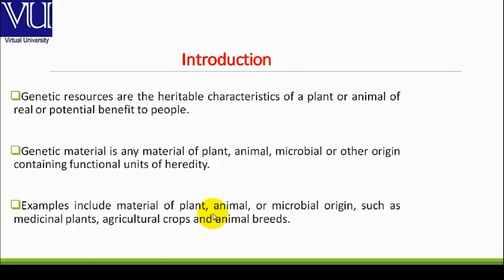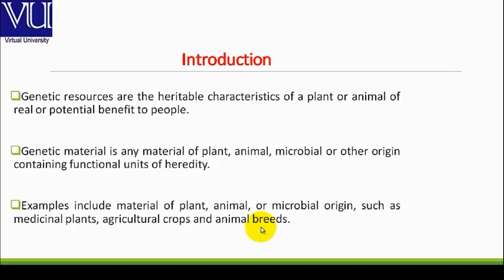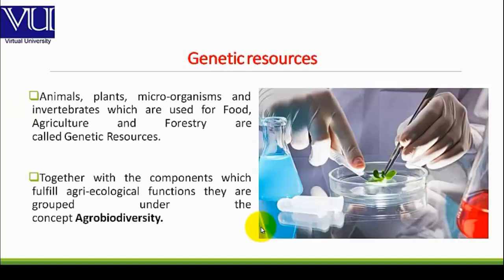Examples of such resources include materials of plants, animals, or microbial origins. Such as medicinal plants, agricultural crops, and animal breeds. So we can say that genetic material of plants, animals, or other microorganisms is a Genetic Resource. These resources also include all those animals, plants, and microorganisms...